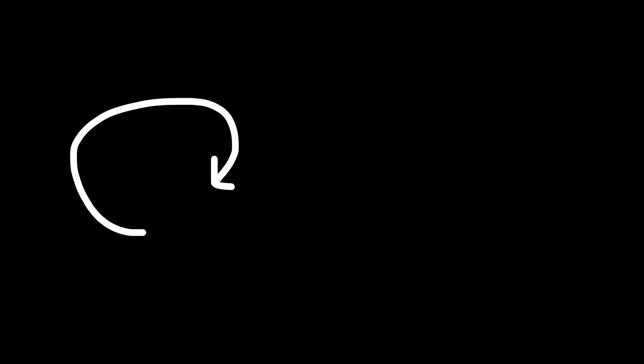In this region, the star's rotation and magnetic field are quantized. Neutron vortex filaments carry a single unit of angular momentum each, while proton vortex filaments carry a single unit of magnetic flux.